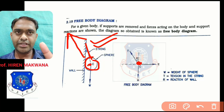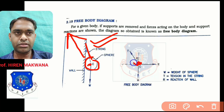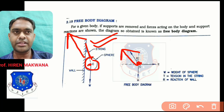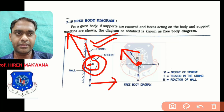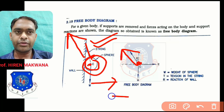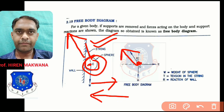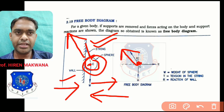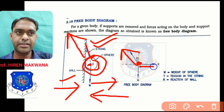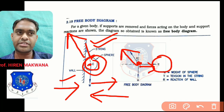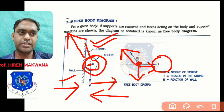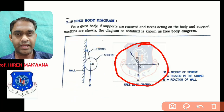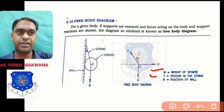Remember: tension always acts towards the fixed point. From center C, along the direction of the rope towards the fixed point, tension T is acting. If you pull the sphere and release it, it collides with the wall, and the wall offers an opposite reaction R. Weight acts vertically downward. This is the free body diagram — forces drawn at the center: weight, tension in the string, and reaction of the wall.